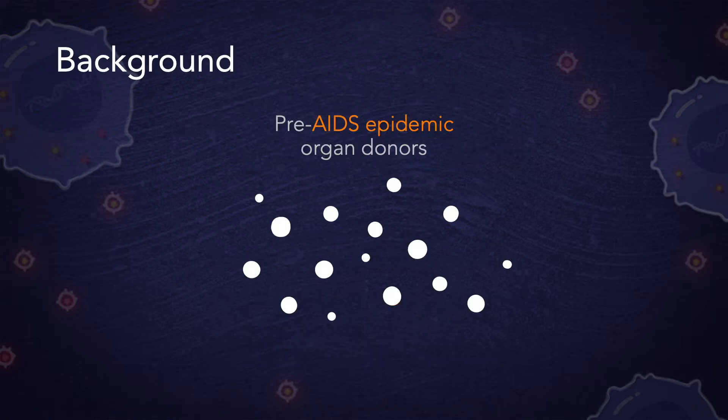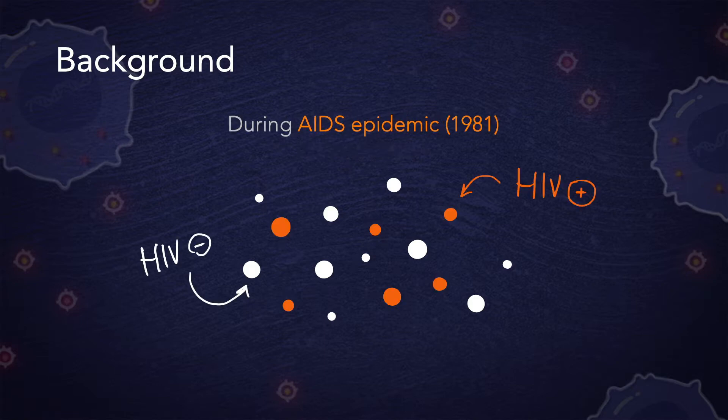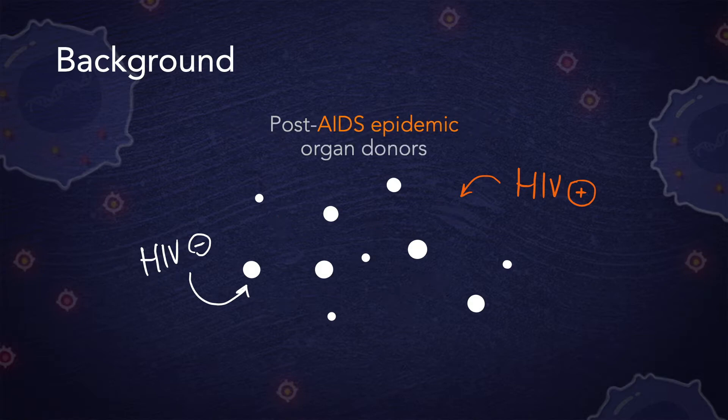This is a representation of the organ donor pool in the United States before the AIDS epidemic in the 1980s. During the epidemic, highly infectious HIV was rapidly spreading through segments of the U.S. population. As a protective measure, the government prohibited the use of organs from people with HIV in organ transplantation.